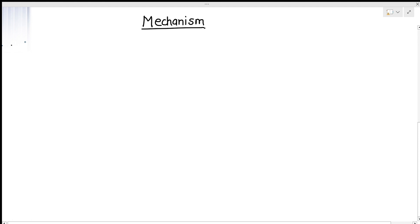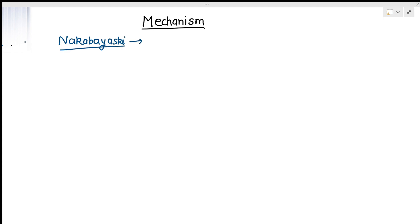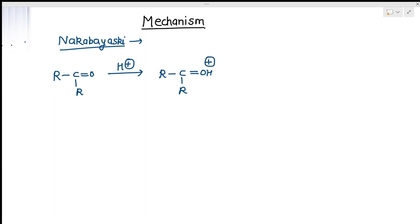Now see the mechanism. Several mechanisms have been suggested, but the mechanism given by Nakabayashi is most widely accepted. In this mechanism, the carbonyl compound first reacts with the acid and gets protonated — it undergoes protonation — and then receives electrons from the metal, zinc.